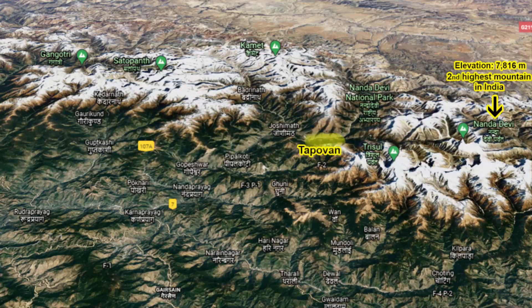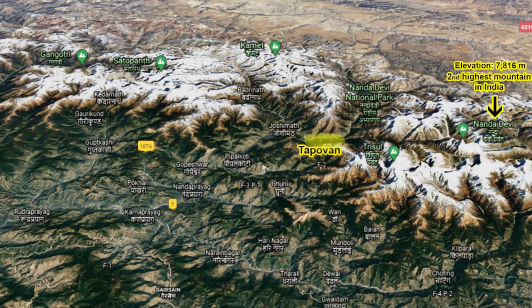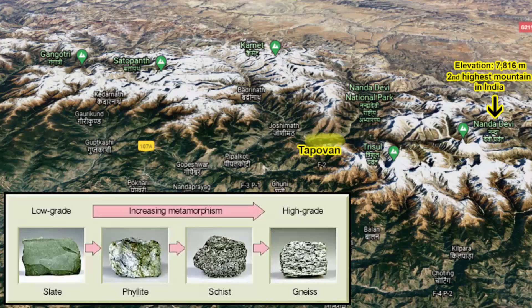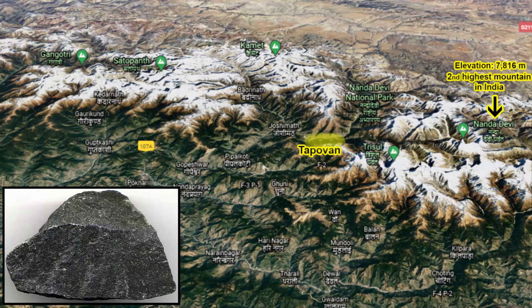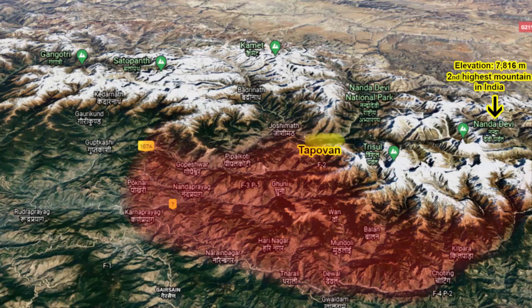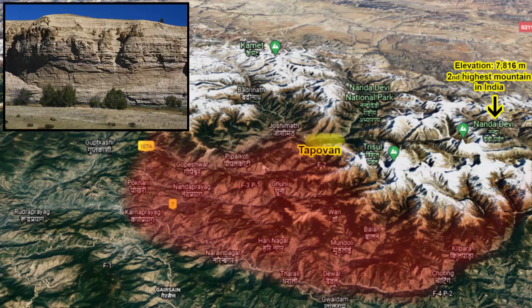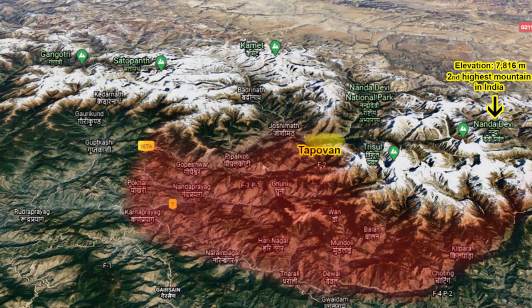Just to understand the elevation of this district — the second highest mountain in India after Kanchanjangha, i.e. Nanda Devi, is located in this district. That means the elevation of this district ranges from 800 meters to 8000 meters above sea level. The northern division of this district is occupied by high mountain ranges and snow-covered peaks, and these mountains are part of the Himalayan mountain range, composed of high-grade metamorphic and volcanic rocks. The southern division is occupied by mountain ranges of low altitude, composed of sedimentary and low-grade metamorphic rocks.